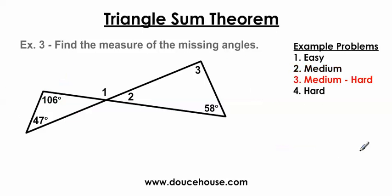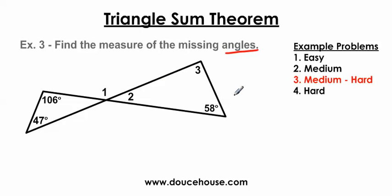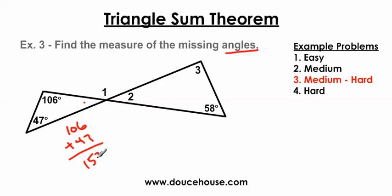Let me move on to a problem that's a little more challenging. We have two triangles here — one over here where all angles need to equal 180 degrees, and another over here as well. The tricky part is that two triangles are sharing a vertex, which confuses a lot of students. My goal is to find angles 1, 2, and 3. I'll work my way across. First, I know the three angles of the left triangle have to equal 180, so 106 plus 47 is 153, and 180 minus 153 gives me 27 degrees.